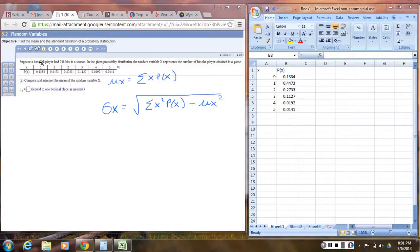This problem states that suppose a baseball player had 248 hits in the season. In the given probability distribution, the random variable X represents the number of hits the player obtained in a game. So the way you read this chart is X is the number of hits that the player gets in a game, so the probability that a player gets zero hits is 0.1334. The probability a player gets only one hit is 0.4473 and so on.